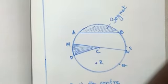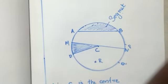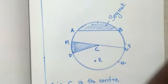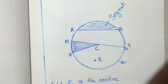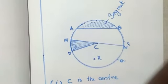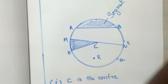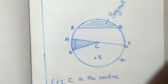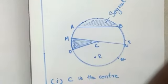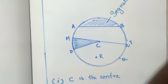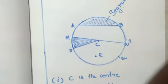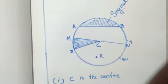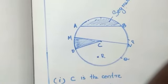And then, AB, line segment AB is a chord. Then, which is the diameter? MN, line segment MN is the diameter. CD is the radius. And, PQ is an arc. R is an interior point. We can mark an exterior point also.